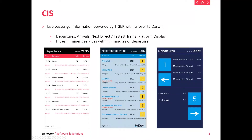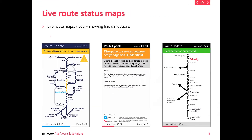Next up is our live route status maps. We'll take any of your lines and design them into a nice looking map, as you can see in the three screenshots below. The examples we use are Huddersfield and the green screen maps. We can show information which we currently pull from the Tyrell feed for multiple TOCs. We show any incident that has passed through as a disruption, lighting up yellow or red dependent on the severity of the incident. We'll then see a details page which shows you the reason behind the disruption.